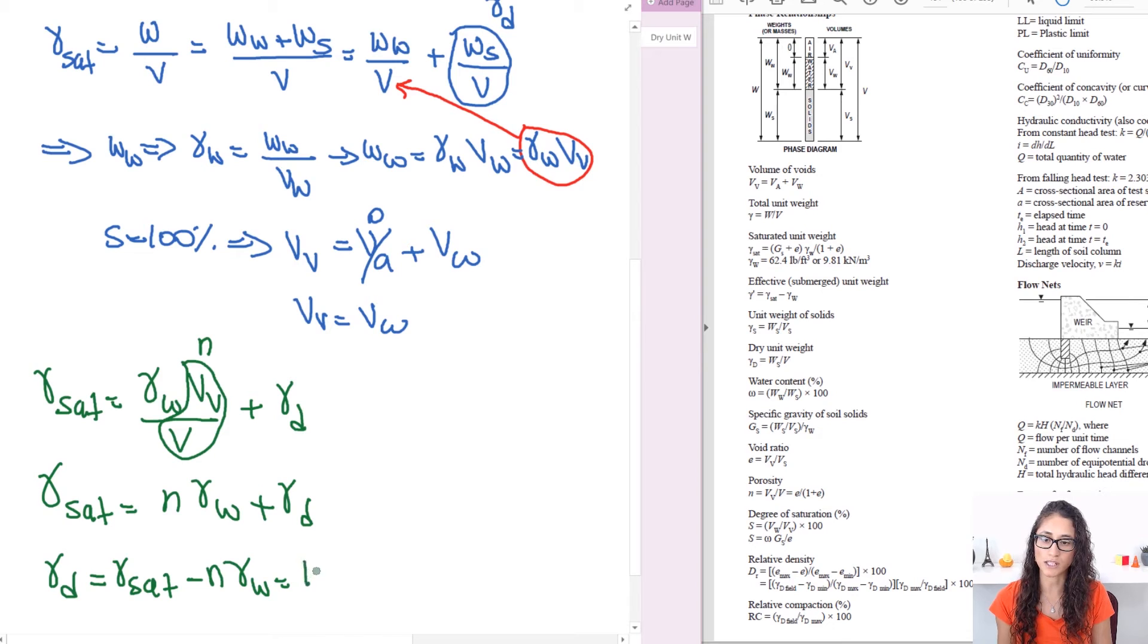So gamma saturated is equal to 120 pounds per cubic feet minus N is equal to 0.26, and gamma water is 62.4. It's a constant that never changes. You have it, it's given to you right here.